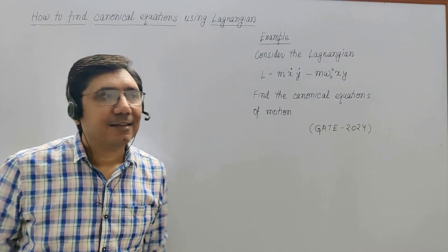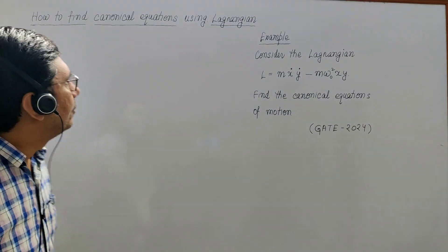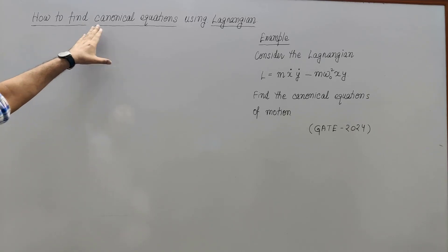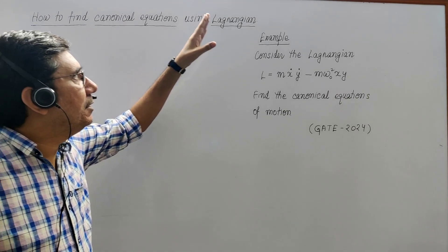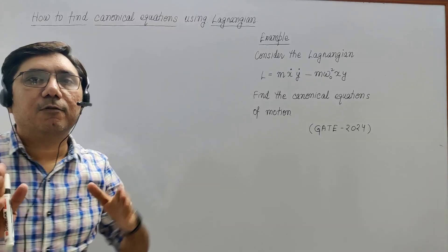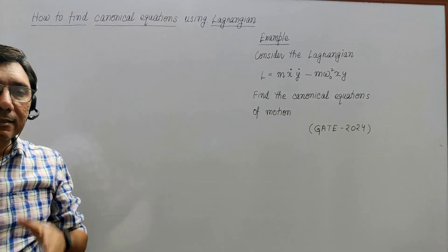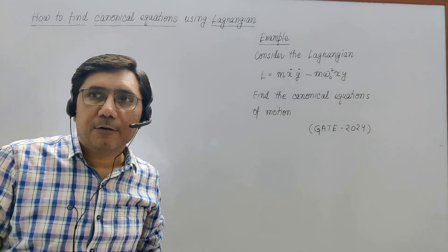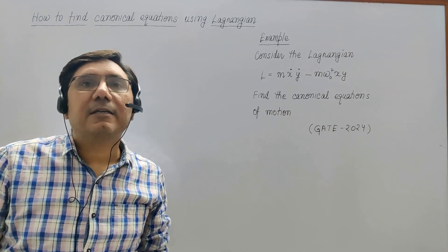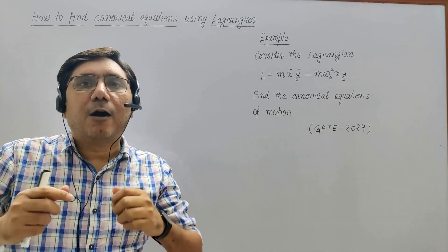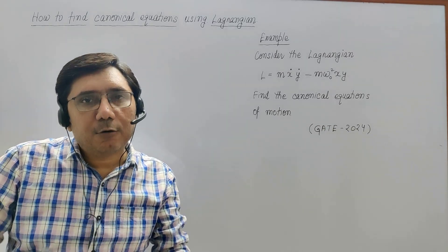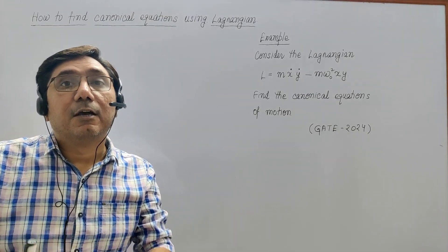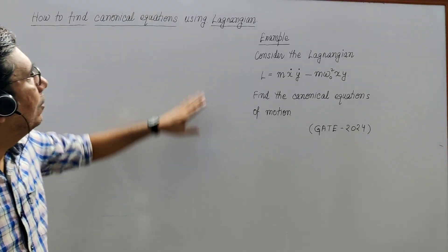Hello students. Today we are going to find out how canonical equations can be derived with the help of Lagrangian. In general, canonical equations are found with the help of Hamiltonian, but today we are going to learn how to find canonical equations with the help of Lagrangian.